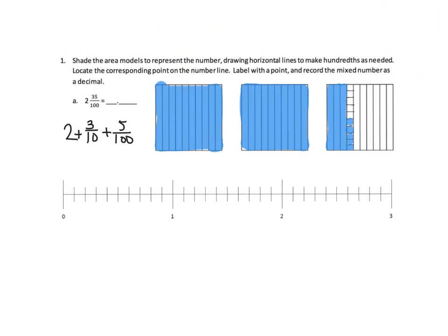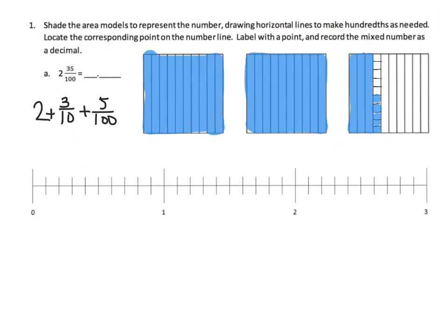That's the resulting picture of our representation. We've got two and thirty-five hundredths, equal to two plus three tenths plus five hundredths. That can also be written as the decimal two point three five. We have our fraction, our decimal, and our area model with some decomposition as a bonus.